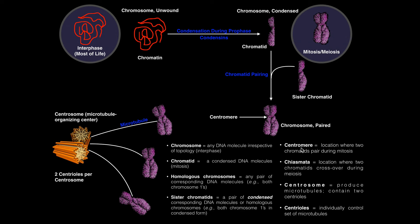Now, what is the centromere? If we look at these two sister chromatids — and again, this is only something observed during mitosis — these sister chromatids pair up and form a kind of X structure, which we see during metaphase of mitosis. The point where these sister chromatids are paired is called the centromere. The centromere only happens during mitosis or meiosis — you will never refer to a centromere during interphase when the DNA is in chromatin form.